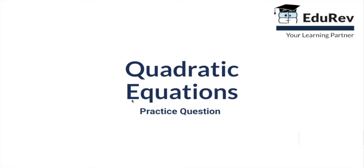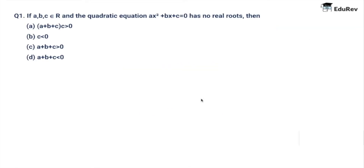Hello students. In this video we will practice some questions on the topic of quadratic equations — it's a very interesting concept. Let's dive into the questions. The first question states: if a, b, and c belong to real numbers and the quadratic equation ax² + bx + c = 0 has no real roots, then which of the following is true? I would suggest you pause the video and give it a try before seeing how I solve it.